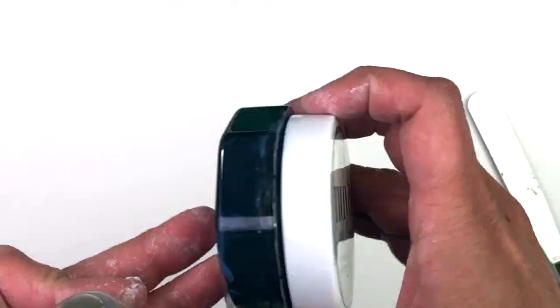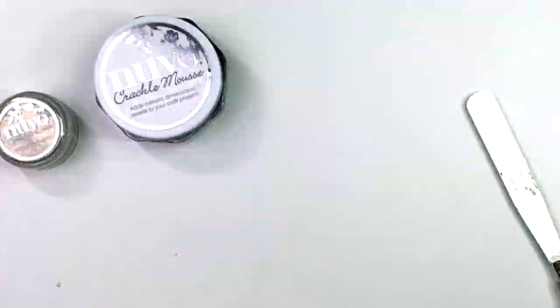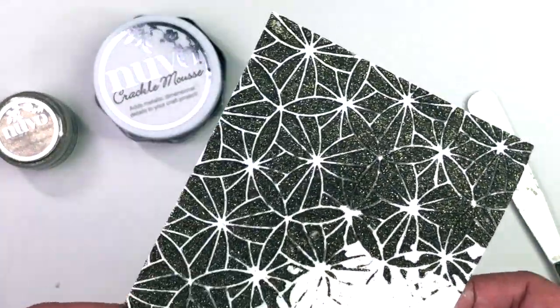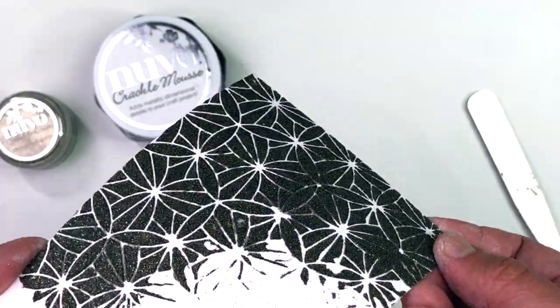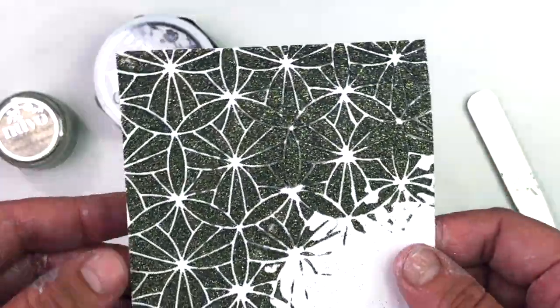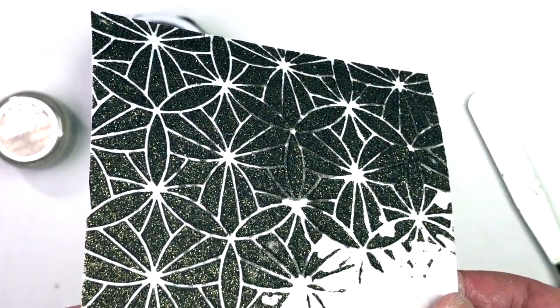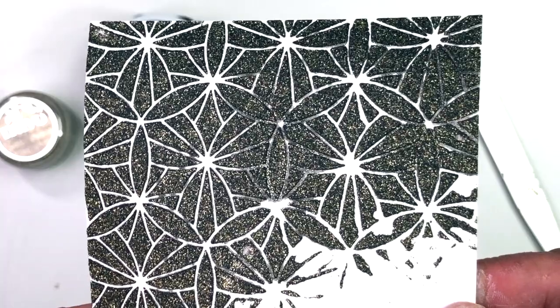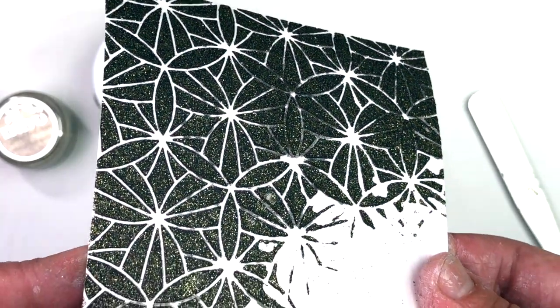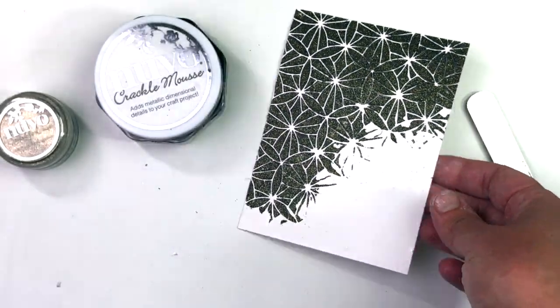So I always like to experiment when I get a new product and just see what different things I can make happen with it. So I decided to take the wrought iron crackle mousse, pack it full of gold glitter, and see what would happen. And it was really interesting because what happened was that glitter acted like a binding agent, and the mousse didn't crackle. So I just thought I would tell you guys, if you pack it full of glitter, it looks amazing, it's so beautiful, but you might lose that crackle effect.